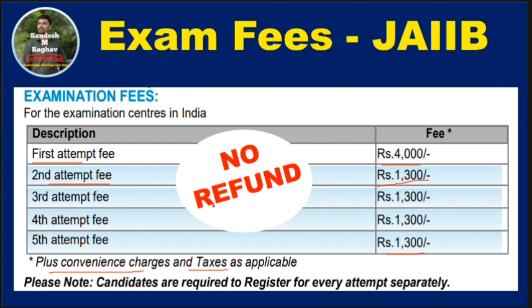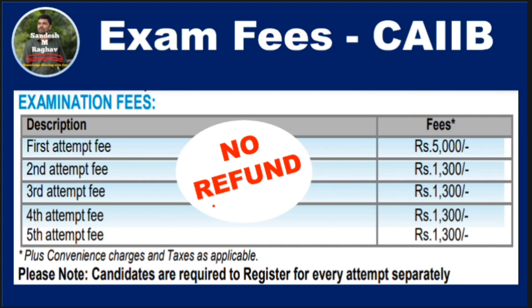CAIIB examination fees: the first attempt fee is Rs. 5000 plus conveyance charges and taxes as applicable. For the second, third, fourth, and fifth attempts, the fee is Rs. 1300 plus charges each. You need to clear all subjects within 5 attempts.